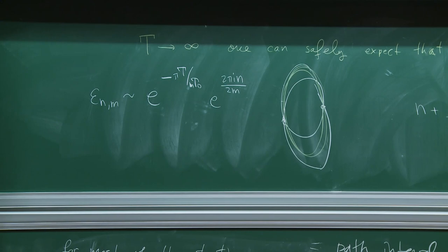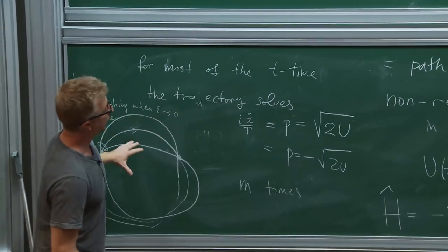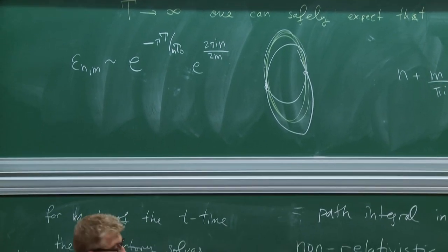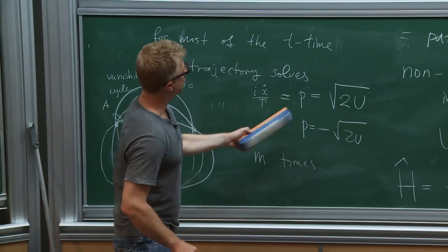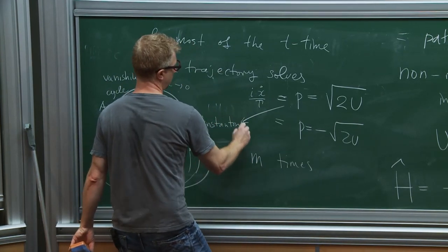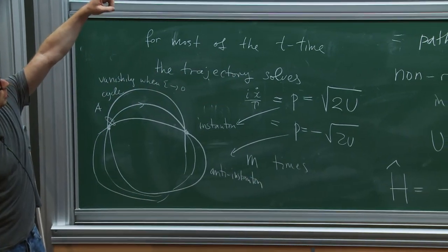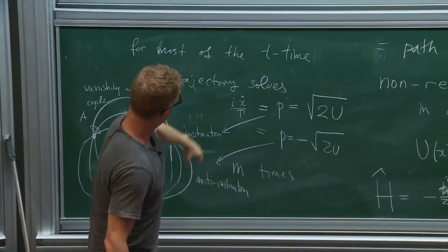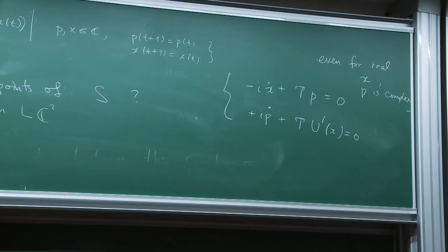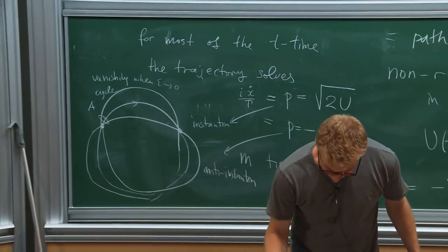We're just analyzing the structure of critical points of the classical action, because that's what determines the possible contours of path integration. The main point is that even though these critical points have intricate structure, for large capital T, small epsilon, small E, they can be analyzed as roughly composed out of two types of ingredients — solutions of simpler equations. These are the first examples of the instanton and anti-instanton. Even though the critical points were solutions of second-order equations in coordinates, or first-order equations in phase space, these building blocks — instantons and anti-instantons — are solutions of algebraic equations in phase space, or first-order equations in coordinate space.